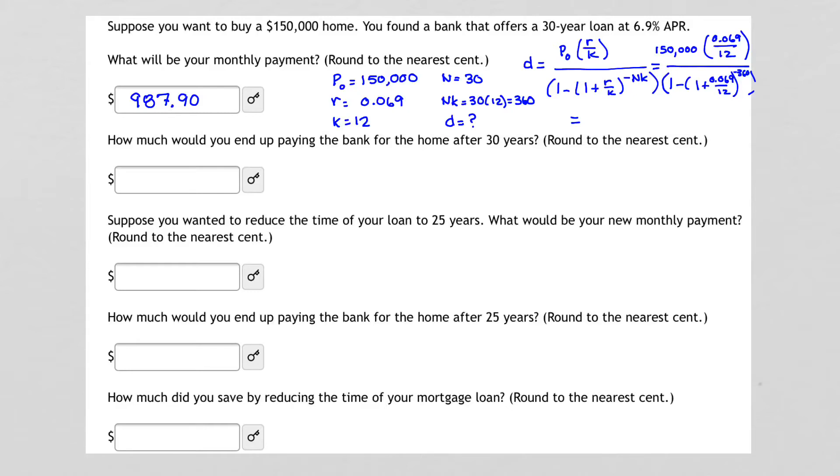Now, we can move on and look at our second problem. How much would you end up paying the bank for the home after 30 years? Now, remember, our loan amount was $150,000, but we're paying $987.90. So that means our payments, in total, come from taking $987.90, first, multiplying it by 12, and that tells how much we are paying per year, and then multiplying it by 30. This is the amount of payments that we make for an entire year over 30 years. So, that's the total amount of payments that we're actually paying the bank for this loan.